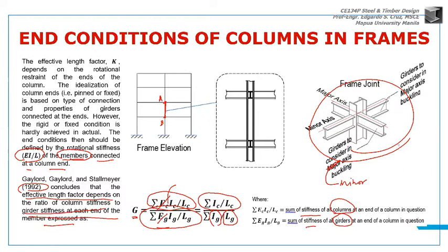For example, this is the column, and here's the girder. So the direction of buckling for the column would be in this direction due to the girder. The direction of buckling is in this direction - that's the x-axis. So Ix.